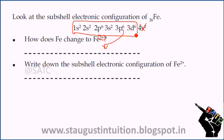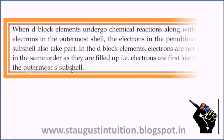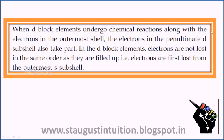Fe2+ means 4s electrons — 2 electrons are lost from the S sub-shell. When D-block elements undergo chemical reactions, along with the electrons in the outermost shell, the electrons in the penultimate D sub-shell also take part. In D-block elements, electrons are not lost in the same order as they are filled. Electrons are first lost from the outermost S sub-shell — that is a very important point.